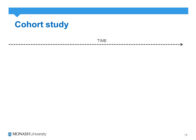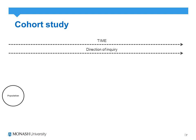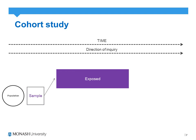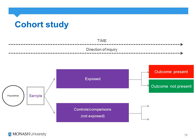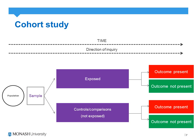Cohort studies are traditionally prospective in their direction of enquiry. From a population, we identify a particular sample according to our inclusion and exclusion criteria. From that sample, we identify patients that are exposed and those that are not exposed — our controls — to a particular risk factor, and then follow them up forward in time to identify the presence or absence of a particular outcome.